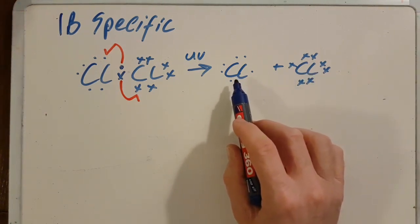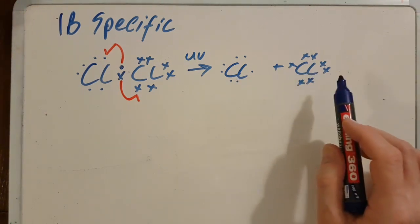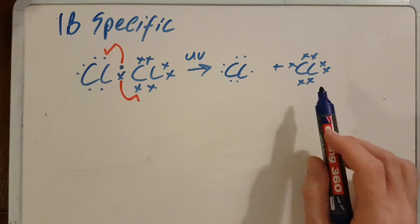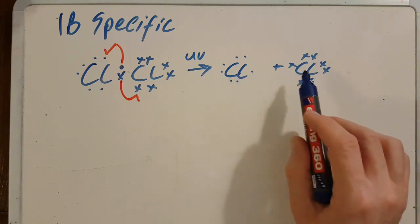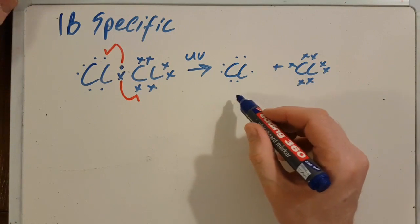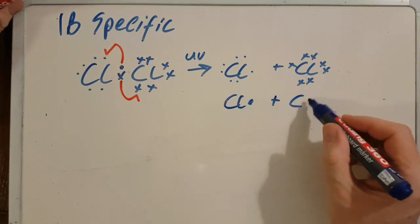So chlorine now has seven electrons and seven, so it's super reactive. It needs one more to be stable. And we don't tend to write it like that. As I said before, we tend to write it with the dot to show the radical.